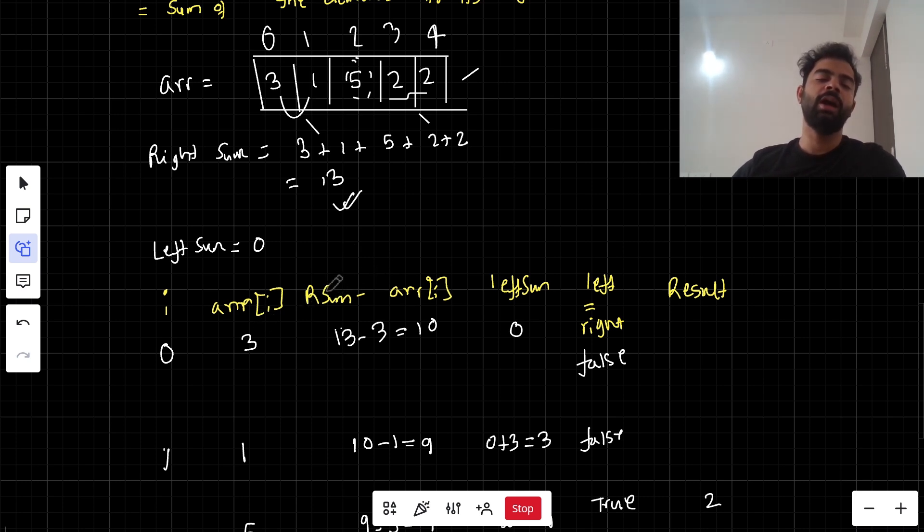We do a difference of the right sum minus the present element, so we get a difference of 10 for the first element. Initially left sum equals 0, so every time we check whether left sum equals right sum.